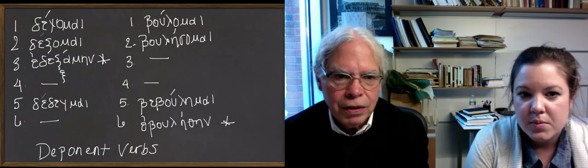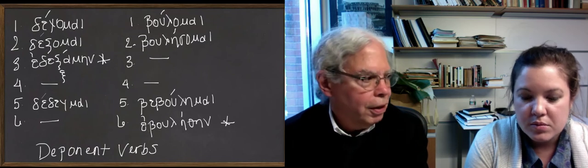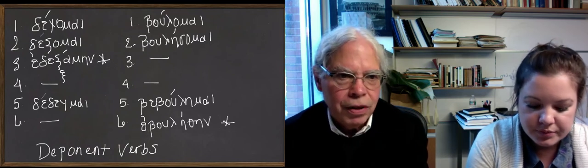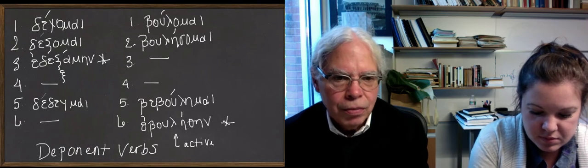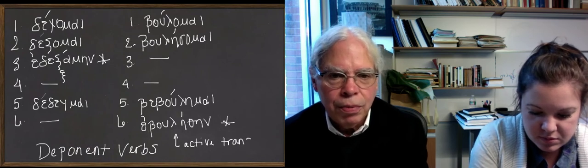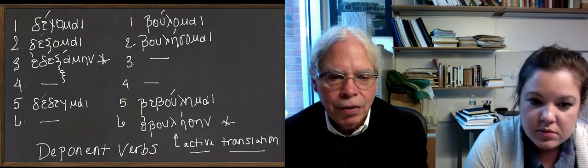So there's effectively no way to do a passive of a middle-only verb. That's the basic idea here. So you've got to watch out for this in the principal parts. You'll learn them as principal parts. It's not that difficult to deal with.